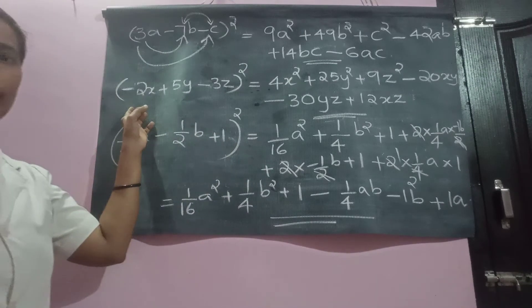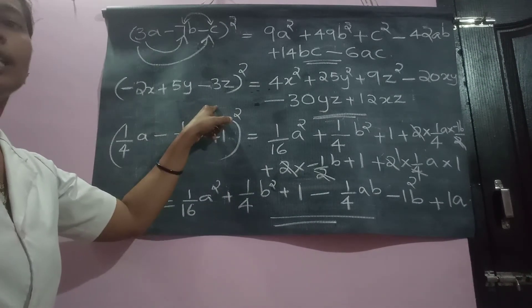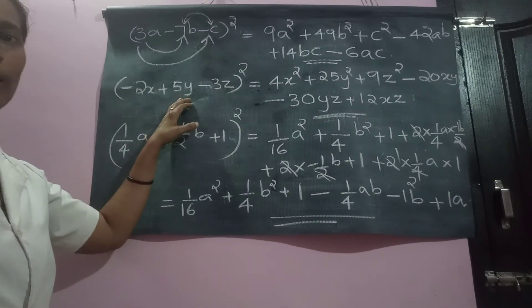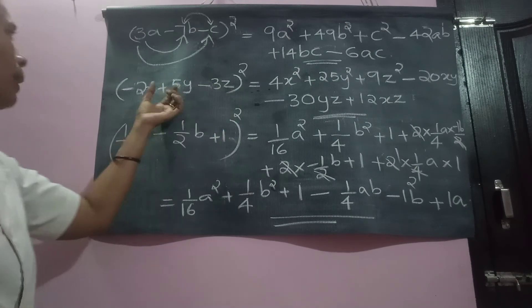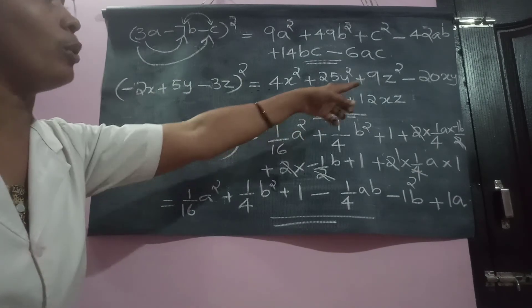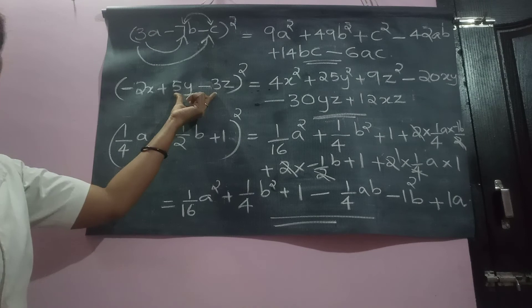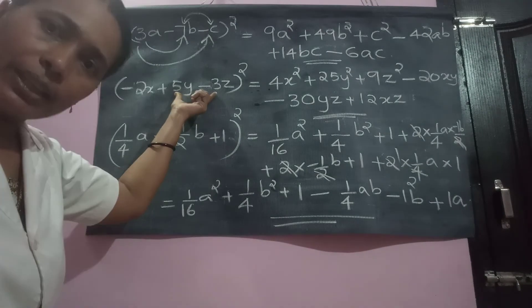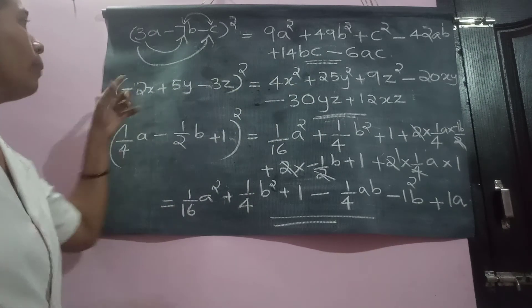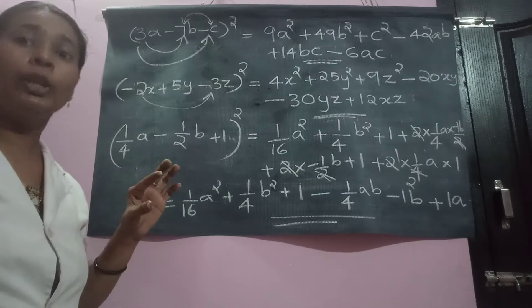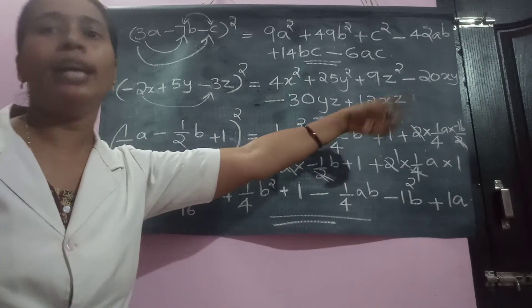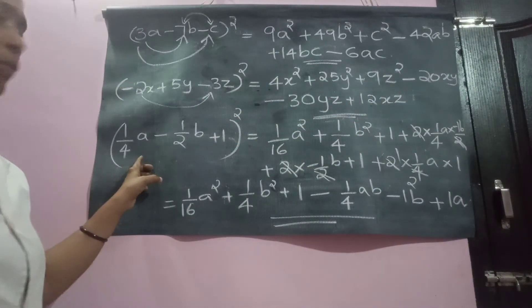Similarly, negative 2X plus 5Y minus 3Z whole square. First, you square these. That is 4X square, 25Y square, 9Z square. Then multiply these two. Negative 10XY. Double it. Negative 20XY. And this one become negative 15YZ. Double it. How much will come? Negative 30YZ. Then last two become positive. Negative into negative become positive. 2, 3's are 6XZ. Double it will become 12XZ.